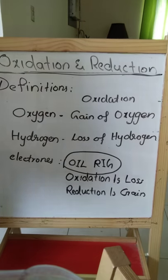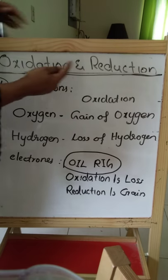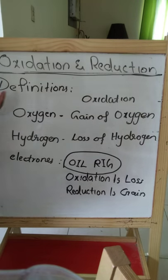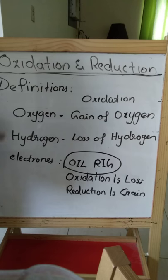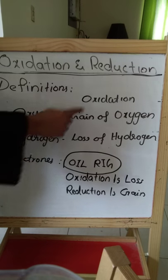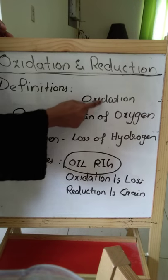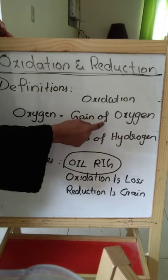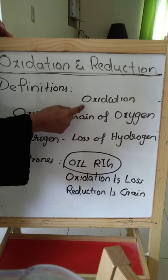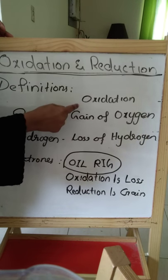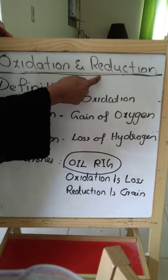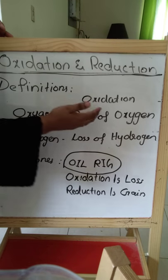Oxidation and reduction are two opposite terms. There are three definitions: in terms of oxygen, in terms of hydrogen, and in terms of electrons. In terms of oxygen — oxidation has the word oxygen in it — so gain of oxygen is oxidation, and when you lose oxygen it is reduction, the opposite.